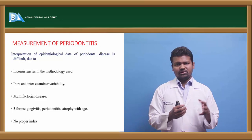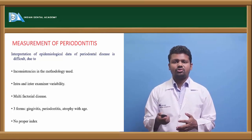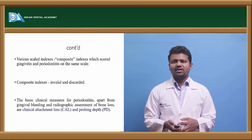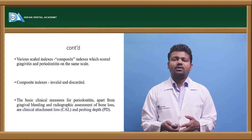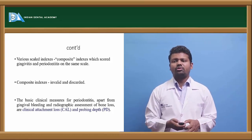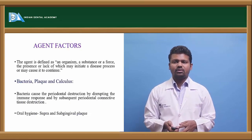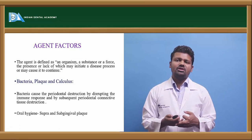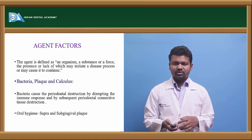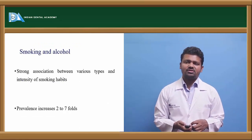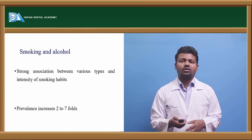Periodontitis as a manifestation of systemic disease, necrotizing ulcerative periodontitis, abscesses including gingival abscesses, pericoroneal abscesses, and endodontic-periodontic combined lesions can also occur. Measurement of periodontitis and interpretation of epidemiological data is difficult because the methodology used is inconsistent. There is no specific index to measure this epidemiological data. There are three forms: gingivitis, periodontitis, and gingival recession with age, making it difficult to measure with any particular index.